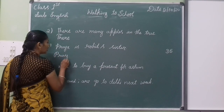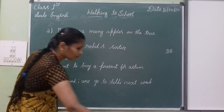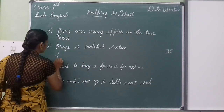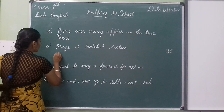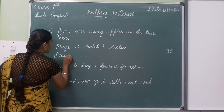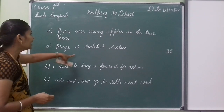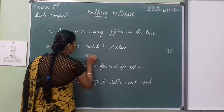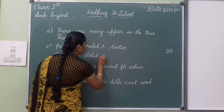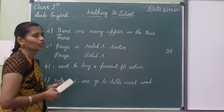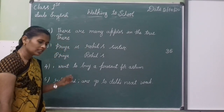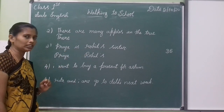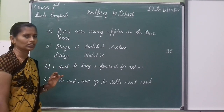Priya — we should write with a capital letter. Priya is Rohi's sister. Priya, you have to write with a capital letter. Here you have to write capital letter — finished.